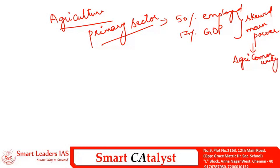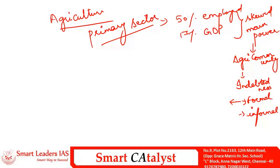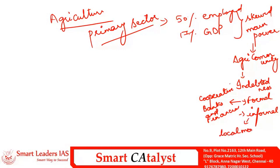One of those important problems is agri indebtedness. This indebtedness can be formal or informal. Formal credit includes loans taken from cooperative societies, banks, and other financial agencies, whereas informal credit includes loans taken from local money lenders. The loan waiver initiatives undertaken by governments focus only on this agri indebtedness.